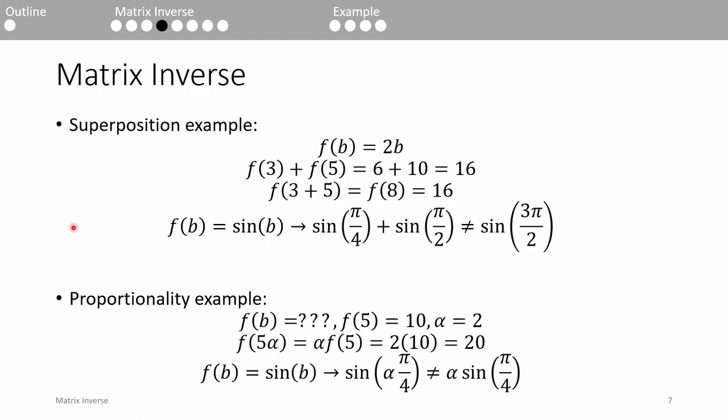Here are examples of superposition and proportionality to make things more concrete. Let's say our function is f of b equals 2b, which is obviously a linear function. Suppose we want to find the sum of f of 3 plus f of 5. We could evaluate the function twice and sum the results, and we get 16.